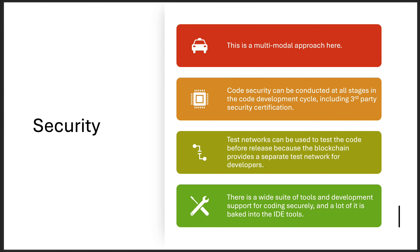You also get a bit more security. Your biggest worry is code security — making sure the code doesn't have loopholes like a re-entrancy attack. You have a multimodal approach: code security can be conducted at all stages of your software development life cycle, with security modules, SecDevOps, QA, and testing. Most blockchains have a test network you can test your code on, and there are third-party certification companies that can audit your code and make sure you've addressed those risks. There are also tons of tools and development support, like Remix and other IDEs, for coding securely.